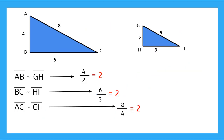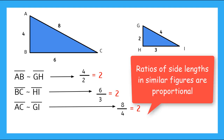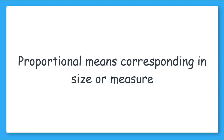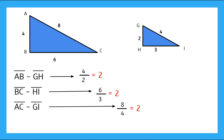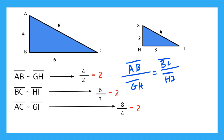We found that each of these ratios were equal. In fact, that is always true for similar figures — these ratios, or the ratio of the side lengths, are proportional. Proportional means corresponding in size or measure. In math, proportional means a pair of equal ratios. So we can say the ratio of AB over GH is equal to BC over HI, which is equal to AC over GI.